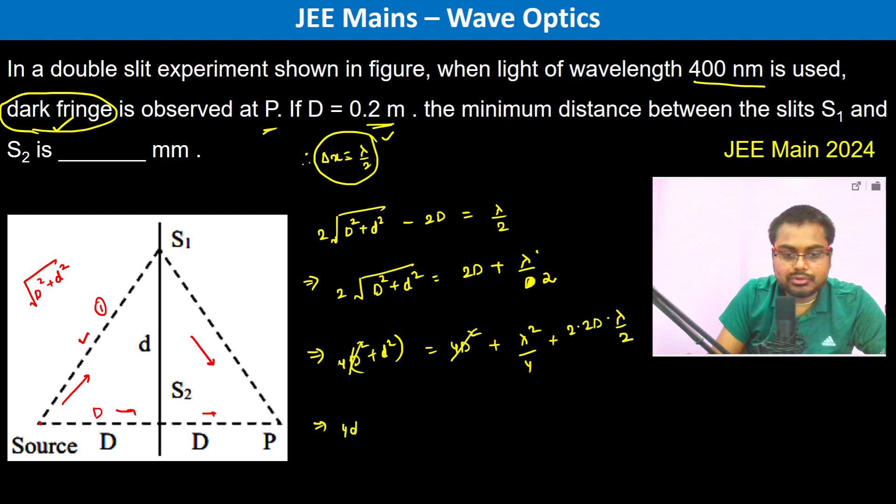Therefore we have 4D - this is very small so we are neglecting this. 2 into 2D into lambda by 2, the 2's cancel, so d becomes root over D into lambda by 2.